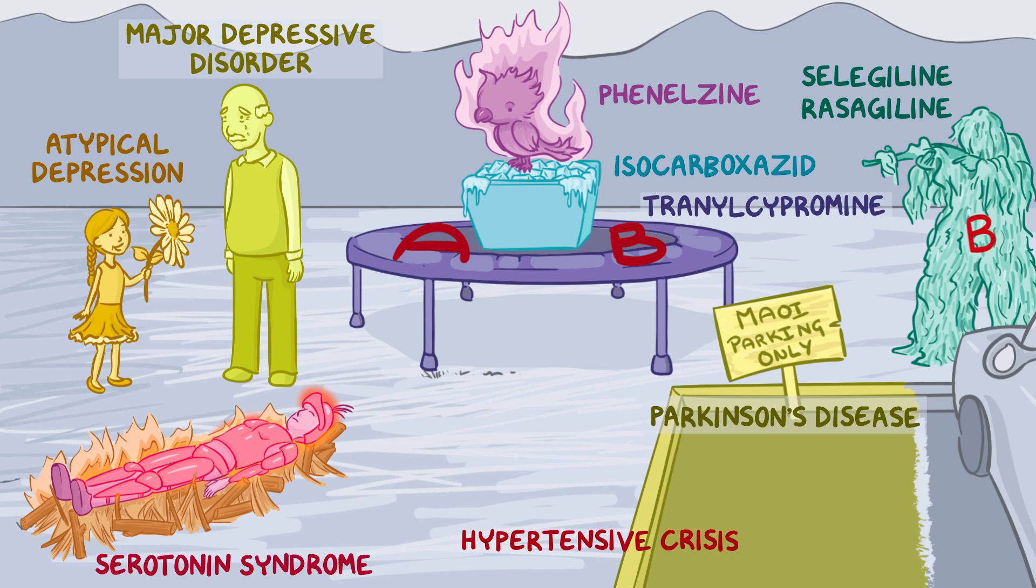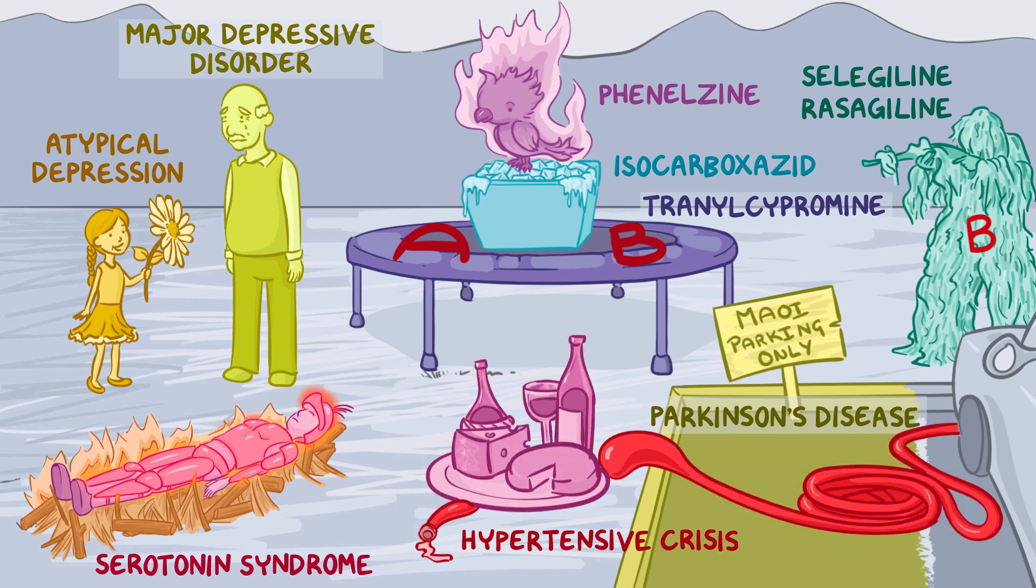For hypertensive crisis, let's set a platter full of cheese and wine, which are both tyramine-rich foods, on top of a red garden hose representing a blood vessel. This crushing weight increases the pressure in the hose, so hypertension!